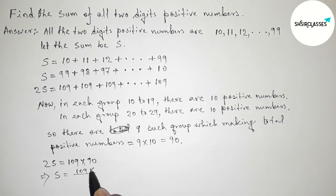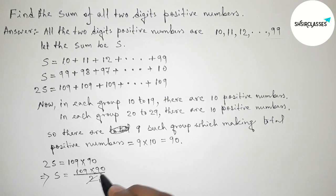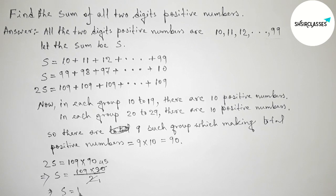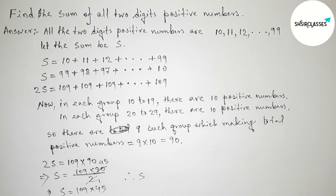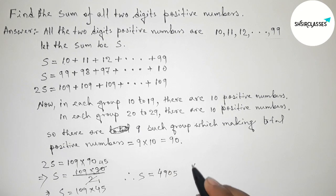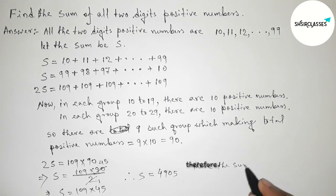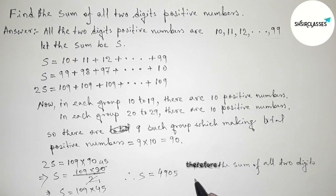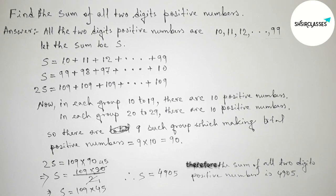So S = 109 × 45 (dividing 90 by 2 gives 45). Multiplying: 109 × 45 = 4905. Therefore, the sum of all two-digit positive numbers is 4905. Thanks for watching — if this video is helpful to you, please share it with your friends.